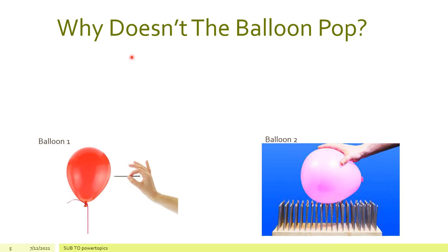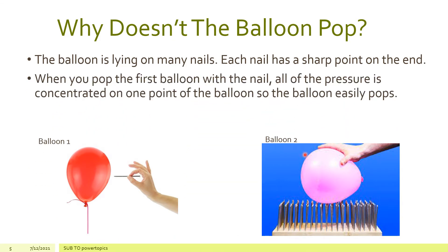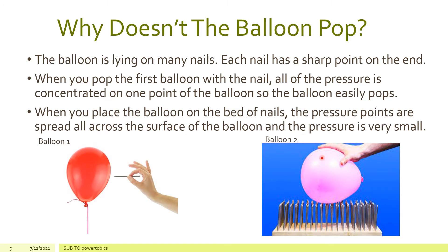I have another question for you. Why doesn't the balloon pop even though it is lying on a bed of nails? But why does it pop when we just use a single nail? When you pop the first balloon with a single nail, all of the pressure is concentrated on one point, so there will be a lot of pressure that will eventually make the balloon pop. But when you place the second balloon on the bed of nails, the pressure points are spread all across the surface of the balloon, and the pressure is very small — too small to pop the balloon, because all of that area is experiencing the same pressure.